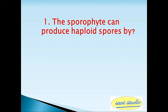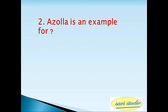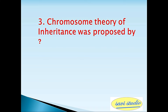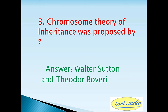First question: A sporophyte can produce haploid spores by — answer: meiosis. Second question: Azolla is an example for — answer: fern. Third question: Chromosome theory of inheritance was proposed by — answer: Walter Sutton and Theodore Boveri.